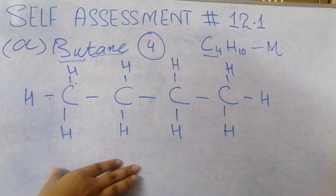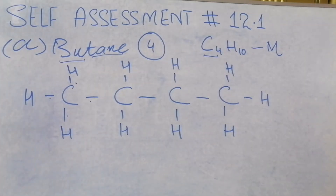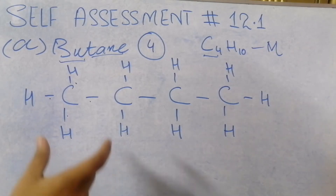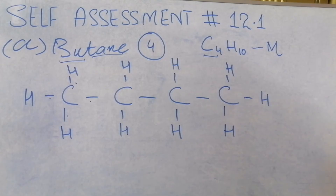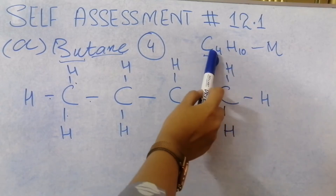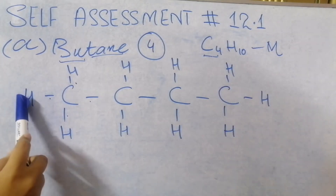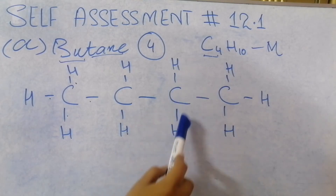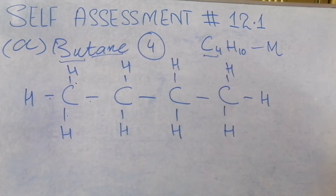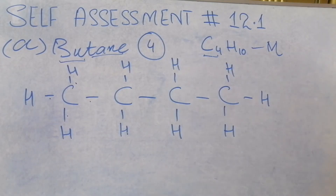So this is the structural formula of butane. Now you can count what we have done: 1, 2, 3, 4 — correct, 4 carbon atoms. And counting the hydrogens: 1 through 10 — that's 10 hydrogen atoms. This matches C4H10. So if you want to verify your structural formula, you can check it against your molecular formula. This was butane.